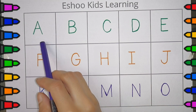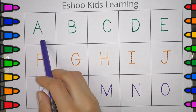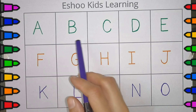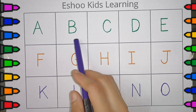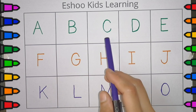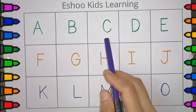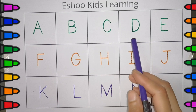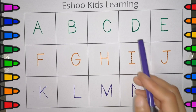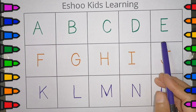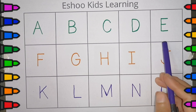A, A for apple. B, B for ball. C, C for cat. D, D for dog.